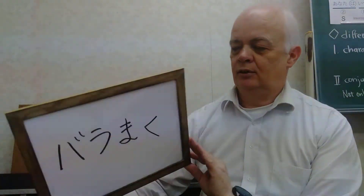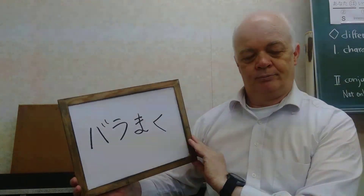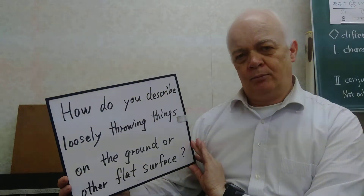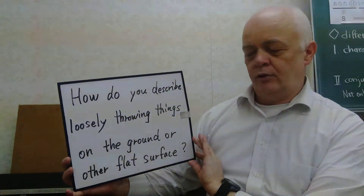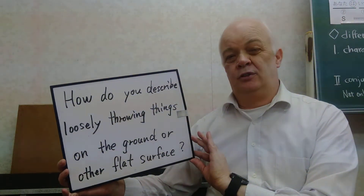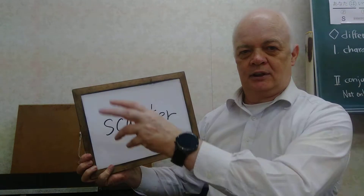Hello everyone. Today's Shiniyage Ego is Paramaku Paramaku. We have a question for you. How do you describe loosely throwing things on the ground or other flat surface? In English, we say we would scatter. Scatter.